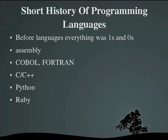Then you had more advanced programs called COBOL, Fortran, and a few others. Then there was C, which was higher level than assembly but still kind of sucked. Then C++, which brought object orientation to the world. Then Python and Ruby, which were both scripting languages — object oriented, very easy to use. And you're going to be learning about Ruby in this series.